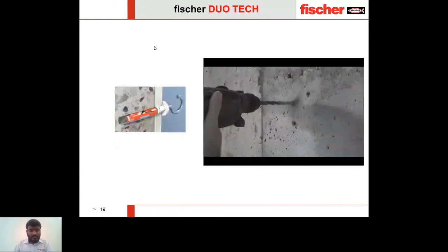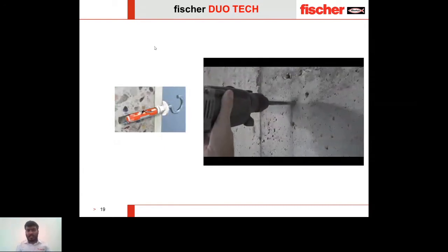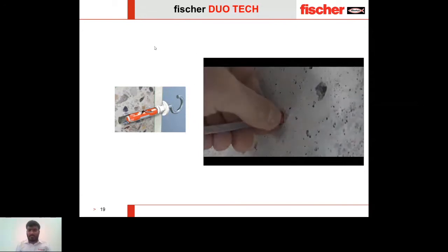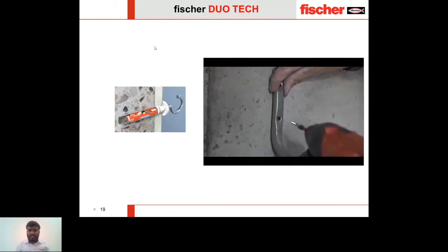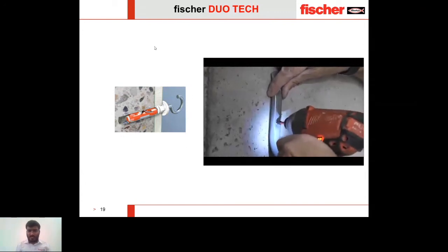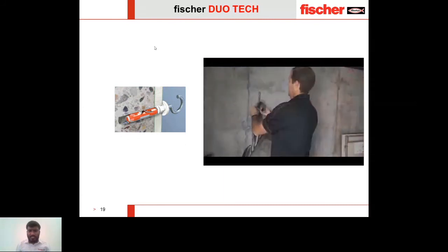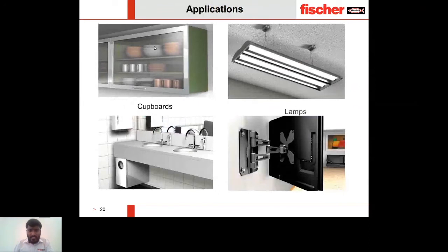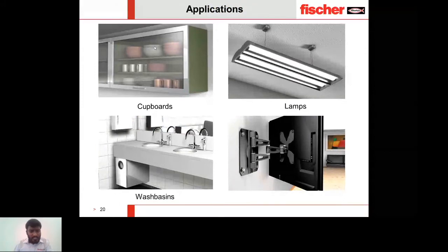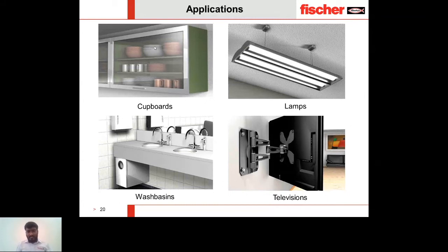Here is a short video showing the DuoTech acting as an expansion anchor in concrete or solid material — the installation is done in one go, cutting the extra strap based on the fixing thickness. Applications for this anchor include cupboard fixings, suspended lamps and lights, washbasin fixings, and wall-mounted televisions.